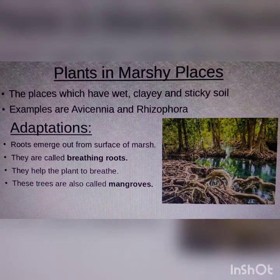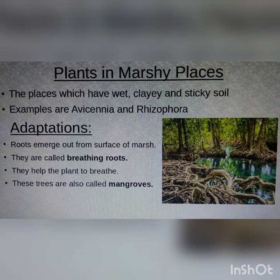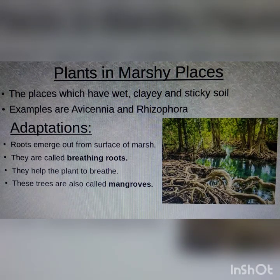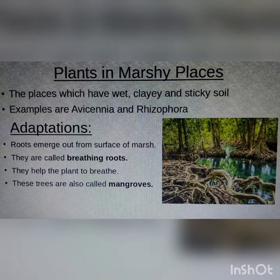Now moving on to plants found in marshy places. A marshy place is a place which has wet, clayey, and sticky soil. Examples of plants that grow there are Avicennia and Rhizophora. The roots of these plants emerge out from the surface of the marsh to help the plant breathe, so they are called breathing roots. These trees are also called mangrove trees.